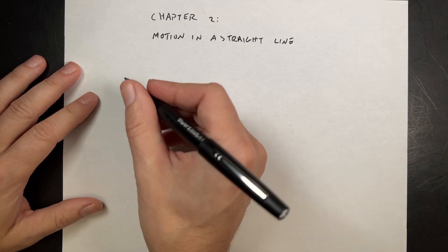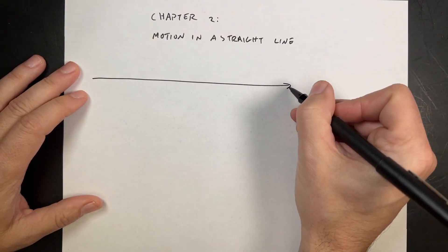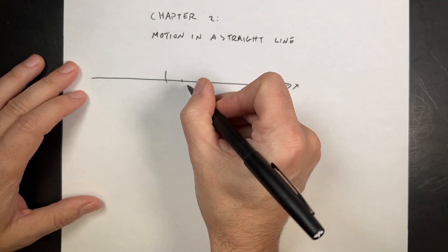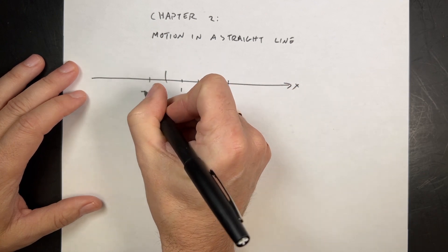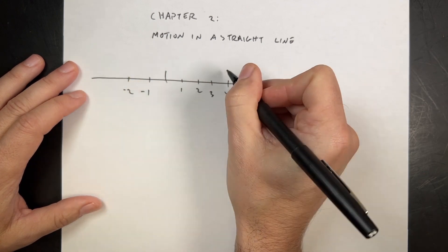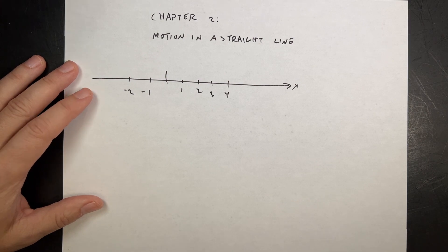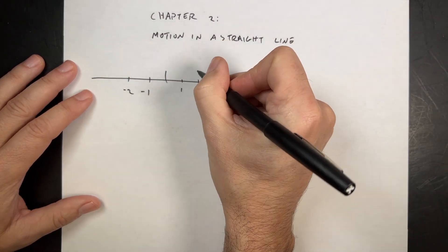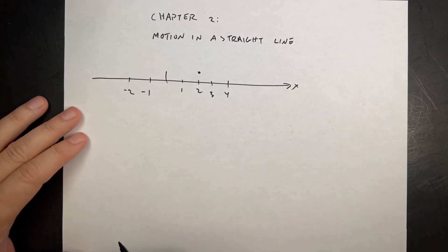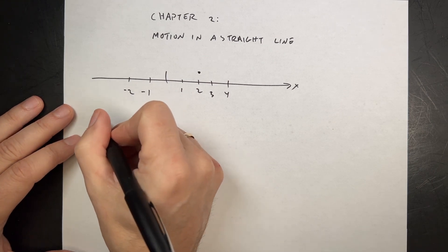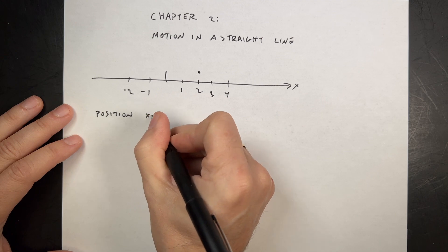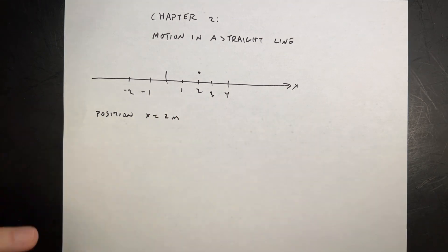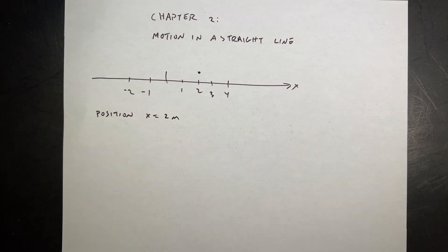Let's start off with a number line on the x-axis: 1, 2, 3, 4, negative 1, negative 2, and so forth. The first thing we want to do if we want to describe motion is the idea of position. Suppose I have a ball right there. Position is x equals 2 meters. It's your x value. Position is your location.